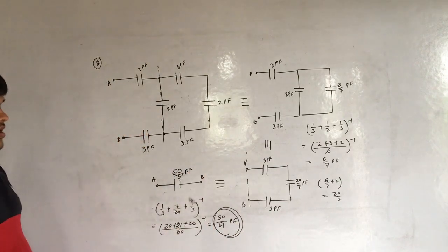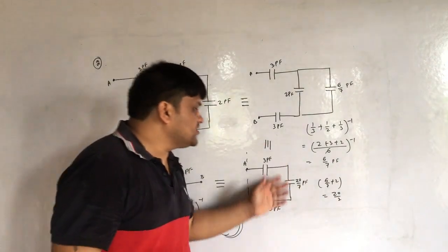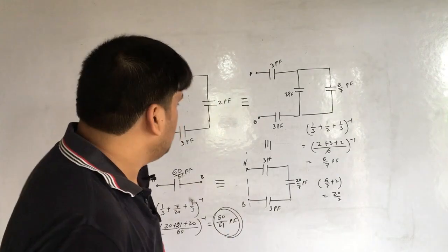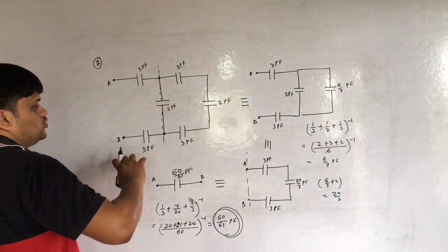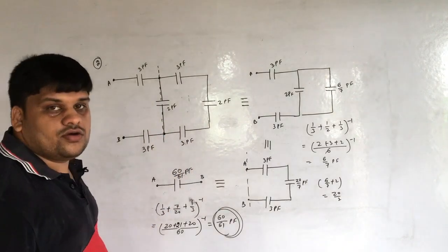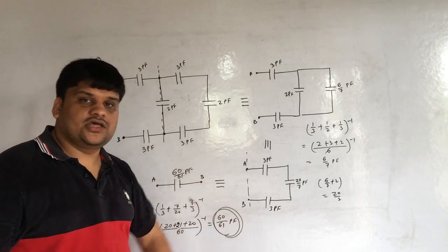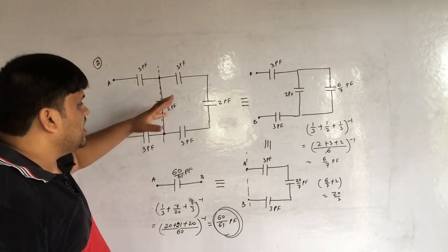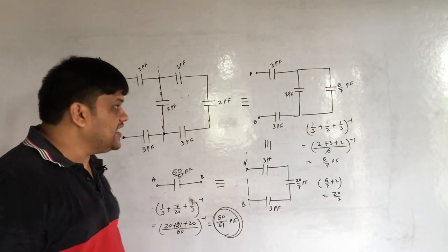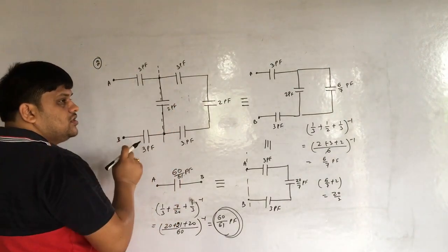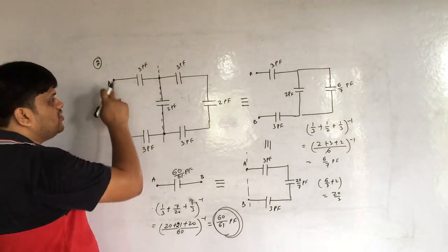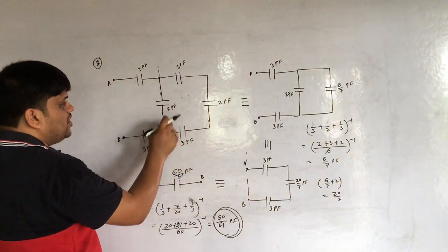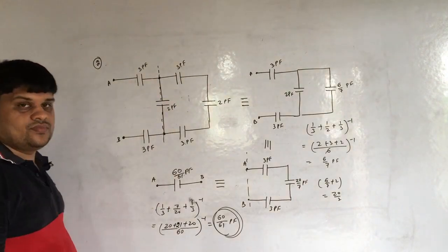The answer is 60/61 picofarad. In your exam, all steps help reduce errors. The important thing here is to first identify between which two points to start solving — I gave the trick for this at the beginning of the video. There is no absolute shortcut for knowing which points to start from; it only comes from practice. Solve 50 to 60 circuits from various books.